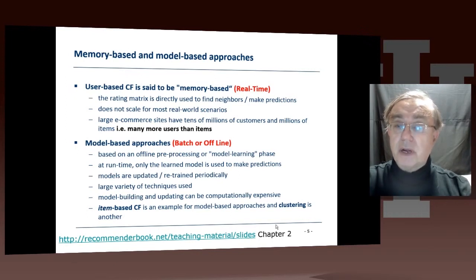You need to find the neighbors and make prediction. For a large commerce site, this just doesn't scale properly. You have tens of millions of customers and millions of items, so you have many more users than items. The user-based approach, finding users near a given user, is a computationally particularly intense idea.